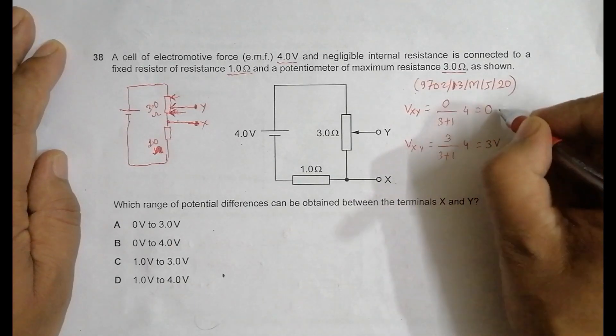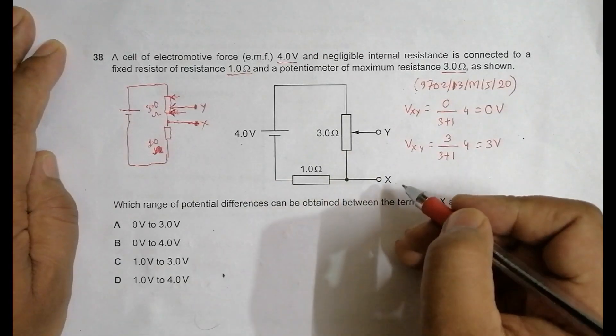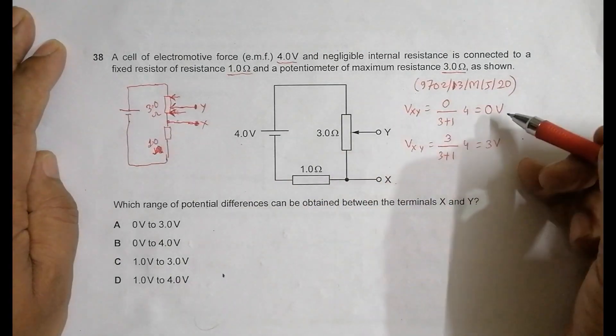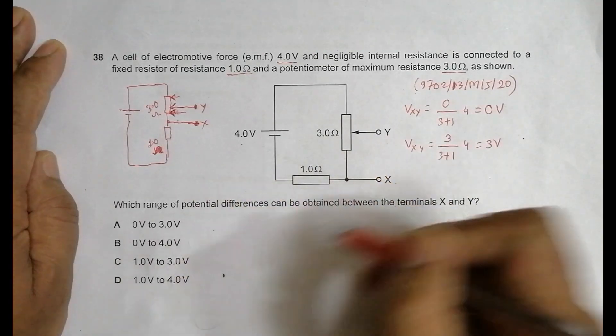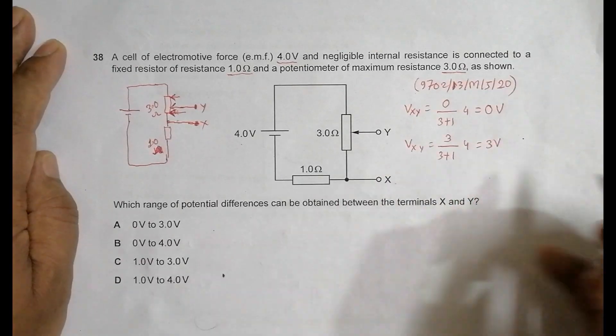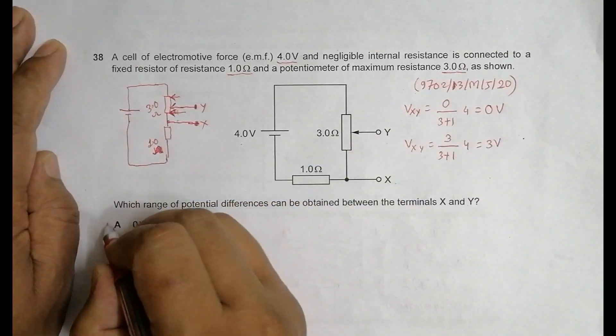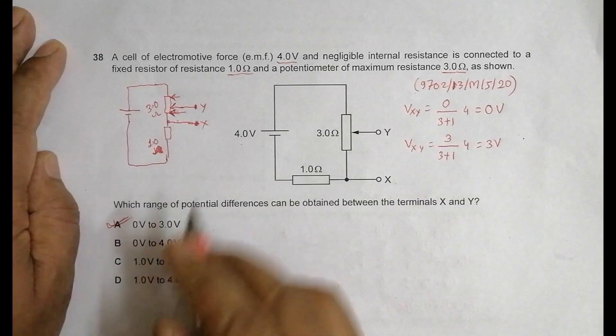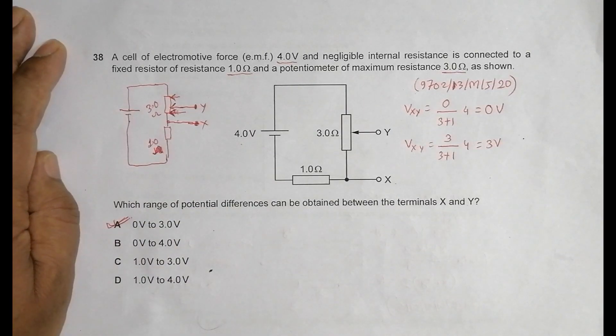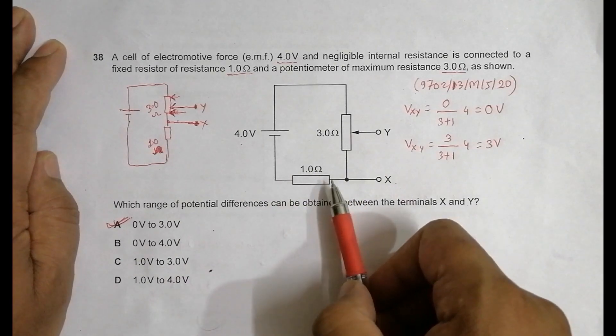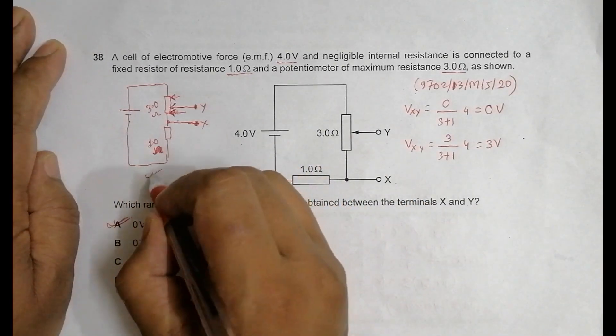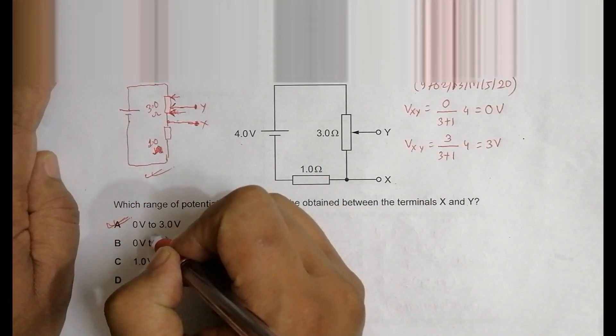So 0 volt to 3 volt. That means the range that we can obtain from this combination is from 0 to 3 volt, which is choice number A. The question was not that much difficult, but this diagram makes it feel so. That's why we change the diagram, and once you change it, it becomes very easy.